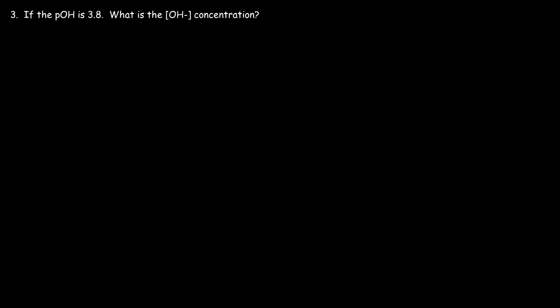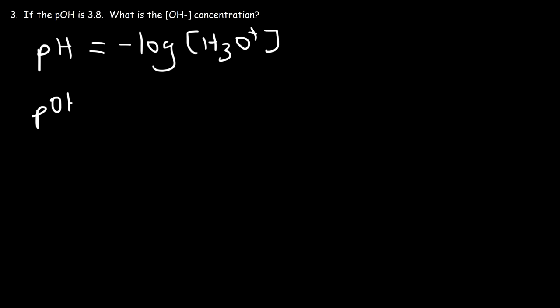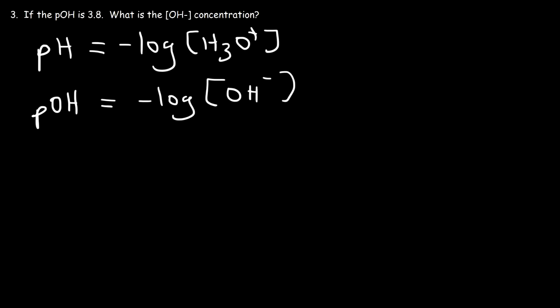Number 3. If the pOH is 3.8, what is the hydroxide concentration? We know that pH equals the negative log of the hydronium ion concentration, so it stands to reason that pOH must equal the negative log of the hydroxide concentration. We need to solve for the hydroxide concentration, so let's do a basic review of logs. If we have log base A of B equals C, you can convert from logarithmic to exponential form: A raised to the C equals B.